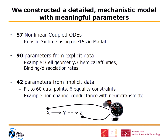Eventually maybe the model will get to a supercomputer. The number of parameters is large — 132 parameters altogether, but 90 of them are defined from explicit data, and all the parameters have physical meaning. For example, the cell geometry has been measured by looking at these cells under a microscope. Chemical affinities and binding and unbinding rates of the various components have all been measured and go straight into our model. We also have 42 parameters from implicit data, and this used 60 data points and six equality constraints in a constrained optimization to figure out all the parameters. The functional forms we use are motivated by the mechanisms, so there are constraints such as monotonicity that are implicit — meaning 60 data points define all 42 parameters very well.